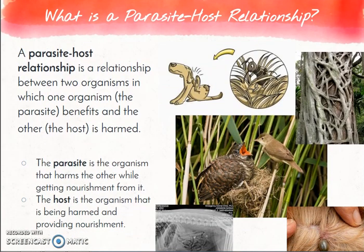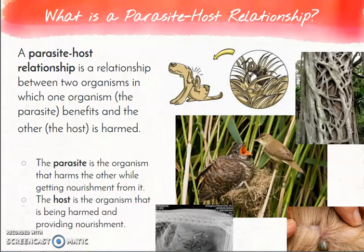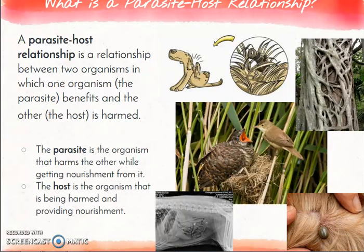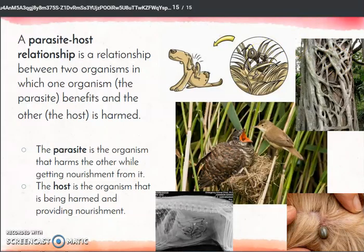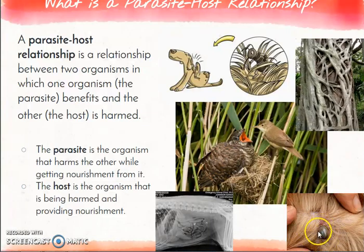Another relationship we'll look at is the parasite-host relationship. This is also between two organisms where one is eating and the other is being harmed — except here, the parasite needs the host to stay alive. A good parasite acts in a way that allows its host to survive so it can continue getting food from it. The parasite harms the other organism to gain nutrients, while the host is being harmed and having its nutrients taken. One example would be a flea or tick on an animal — the flea or tick gains nourishment from the mammal, while the mammal is harmed by sores or possible bacterial infection.